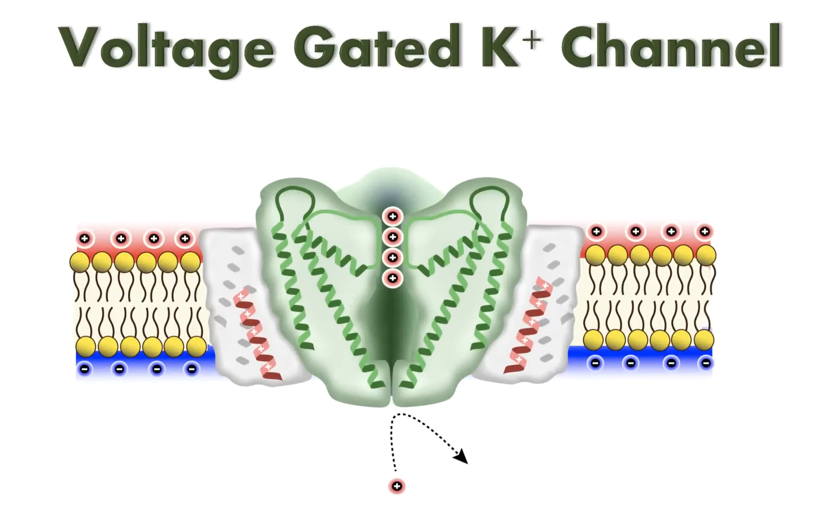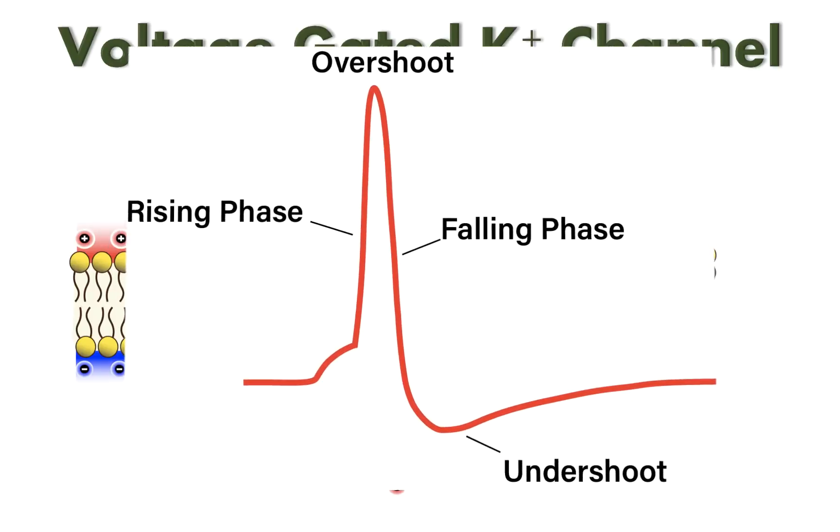For this video, I'm going to talk about voltage-gated potassium channels. Keeping in mind that there's a vast array of potassium channels belonging to the voltage-gated potassium channel family, the one I'm going to focus on are the potassium channels that are classically associated with the neuronal action potential.